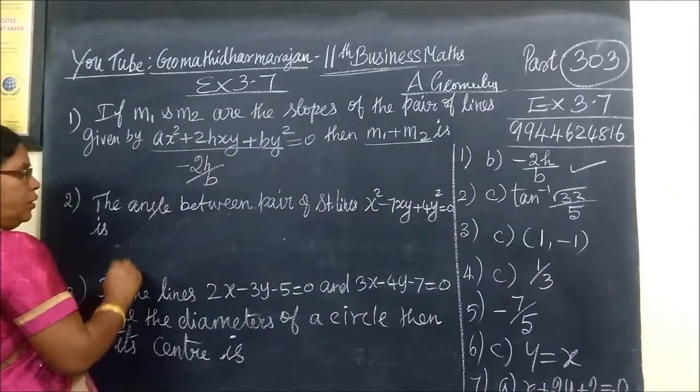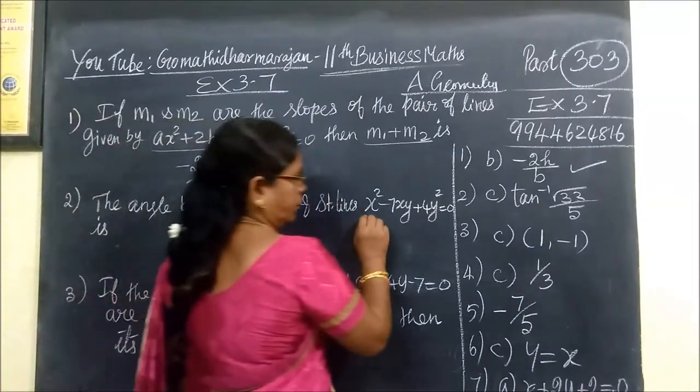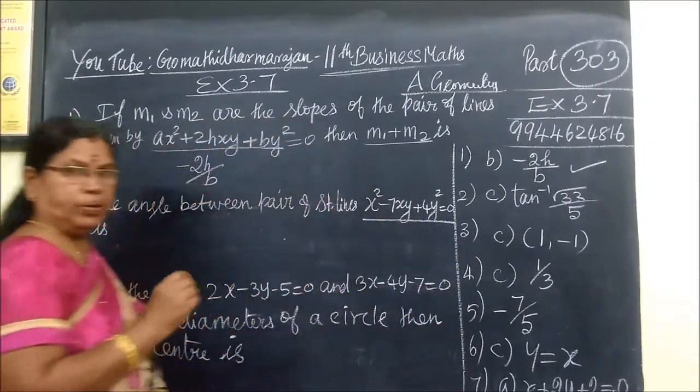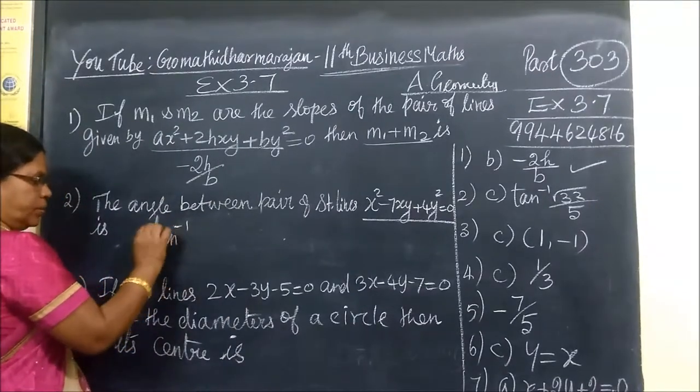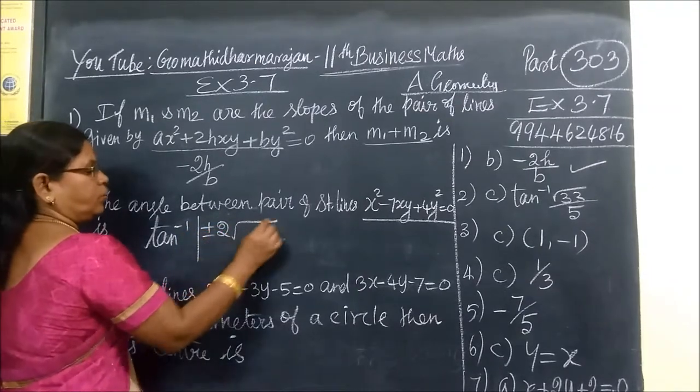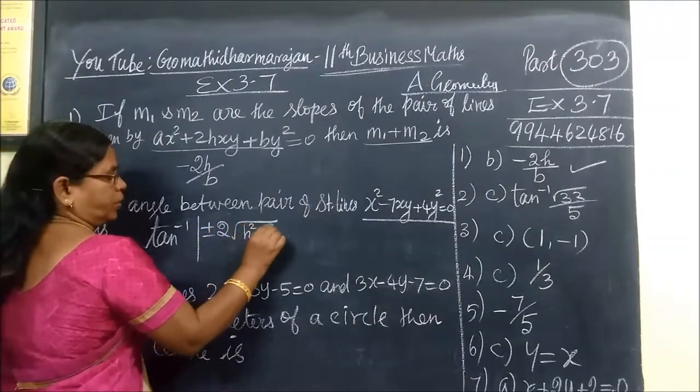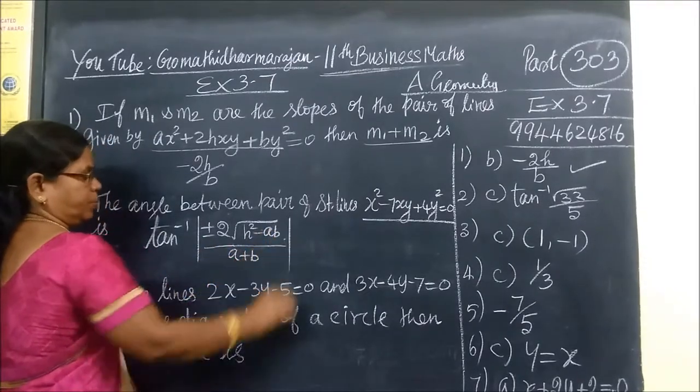The angle between the pair of straight lines will be found: tan inverse, then plus or minus 2 times root of H squared minus AB by A plus B.